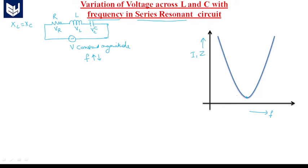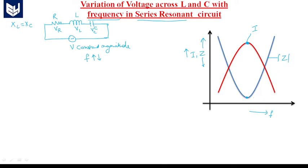At the point where impedance is minimum, current will be maximum. If you draw the plot between current and frequency, the maximum current occurs at the same point where minimum impedance occurs. This frequency is called the resonant frequency.